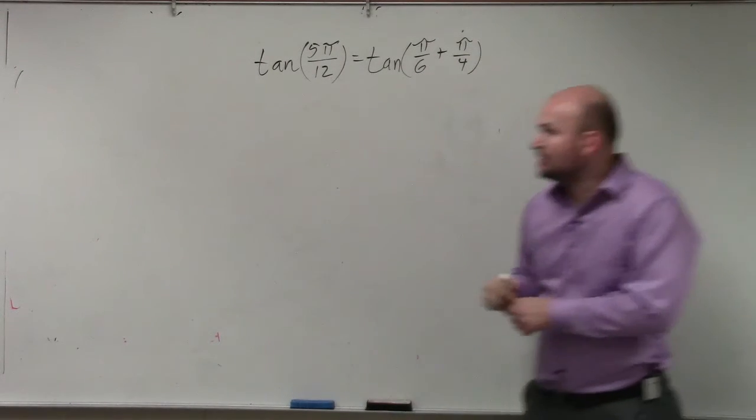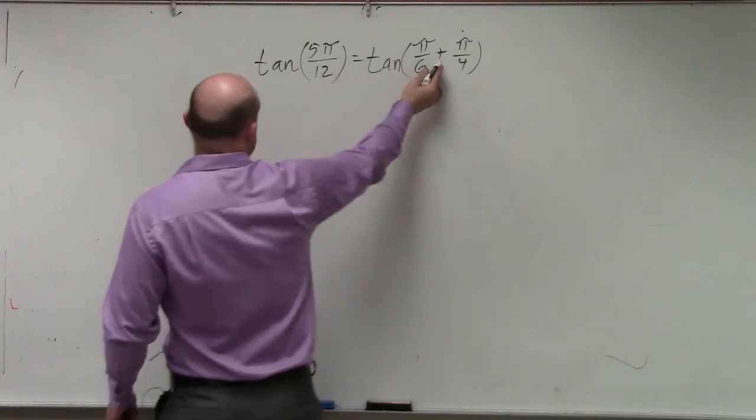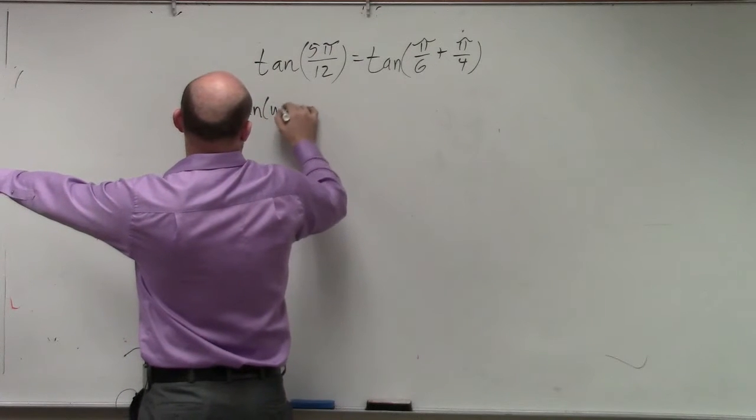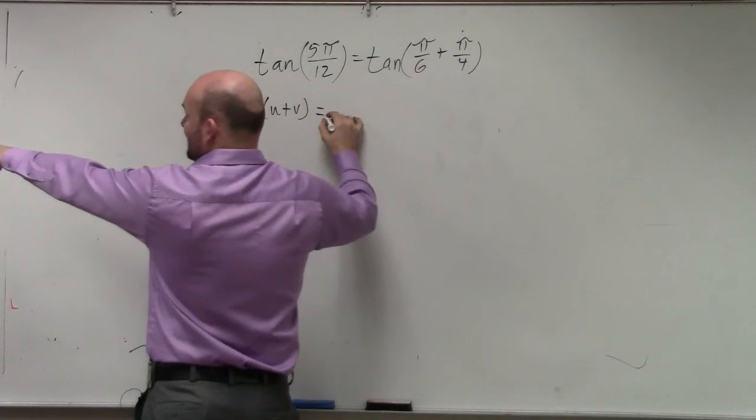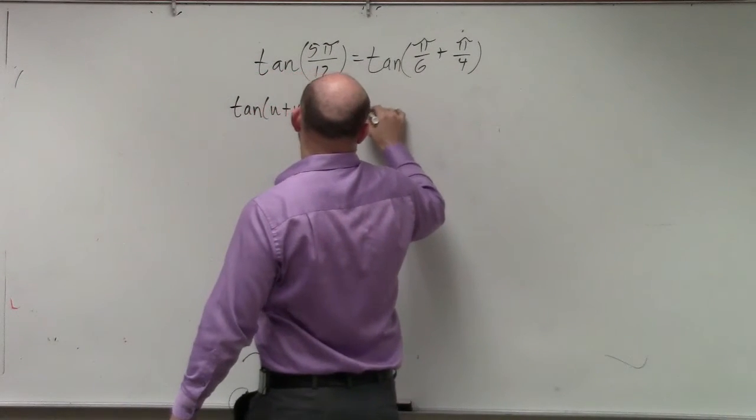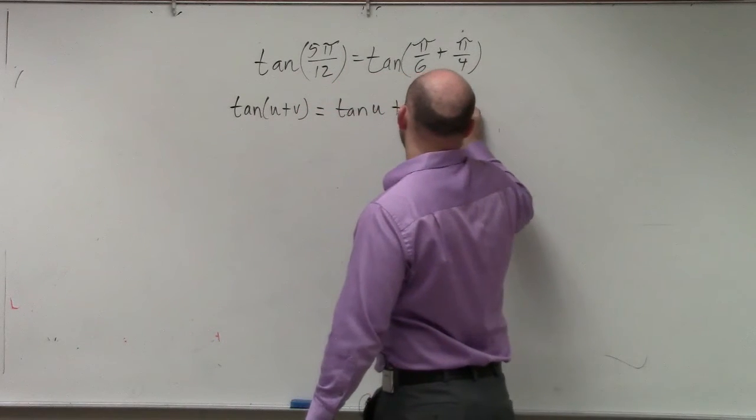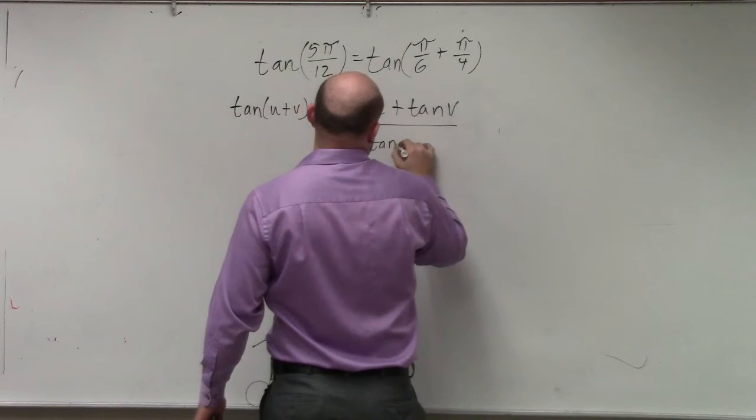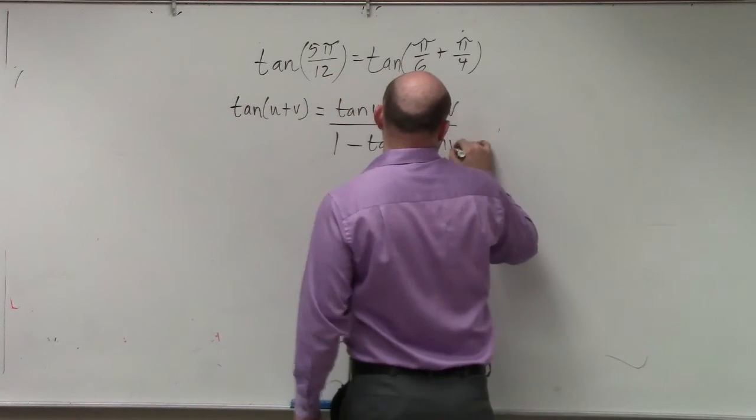And the formula here is for tangent. You can see it's the sum of two angles. So I go over to my tangent formula. And the sum of two angles, u plus v, is going to be the tangent of u plus the tangent of v all over 1 minus the tangent of u times the tangent of v.